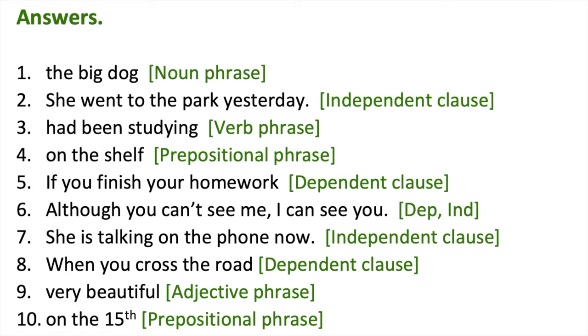She went to the park yesterday. This is an independent clause because there is a subject, she, and a verb, went. This clause makes sense on its own as a sentence. Therefore, it's an independent clause.